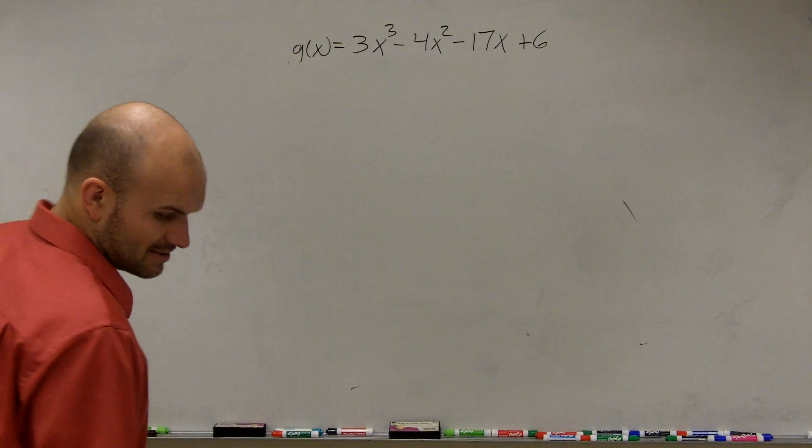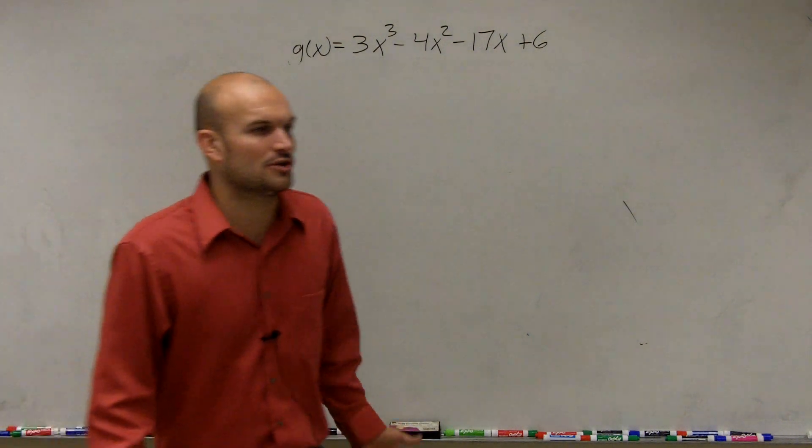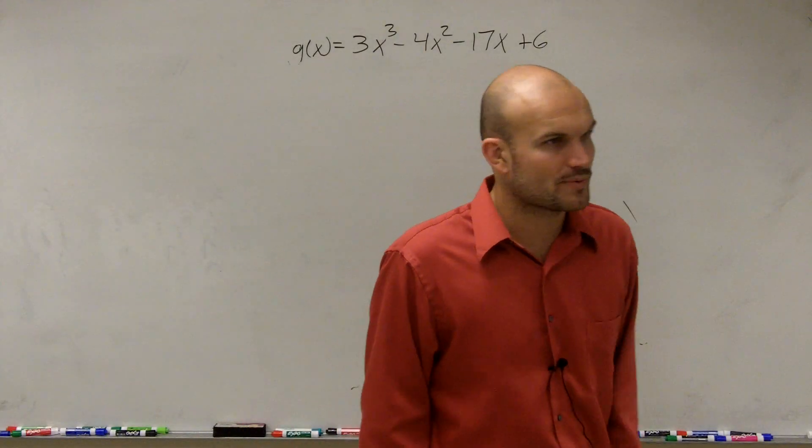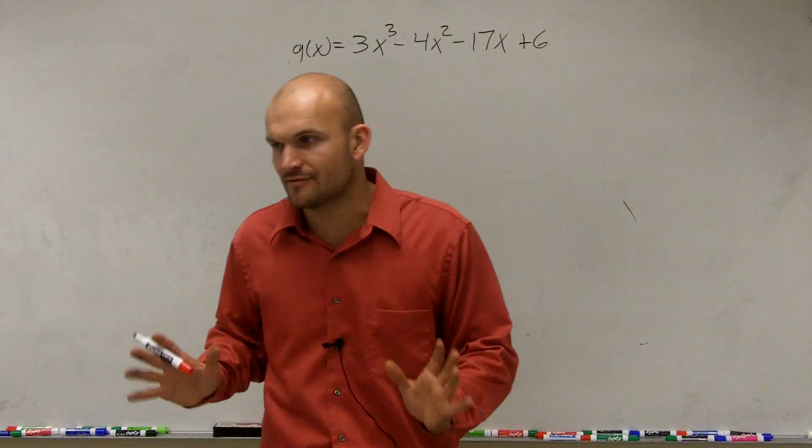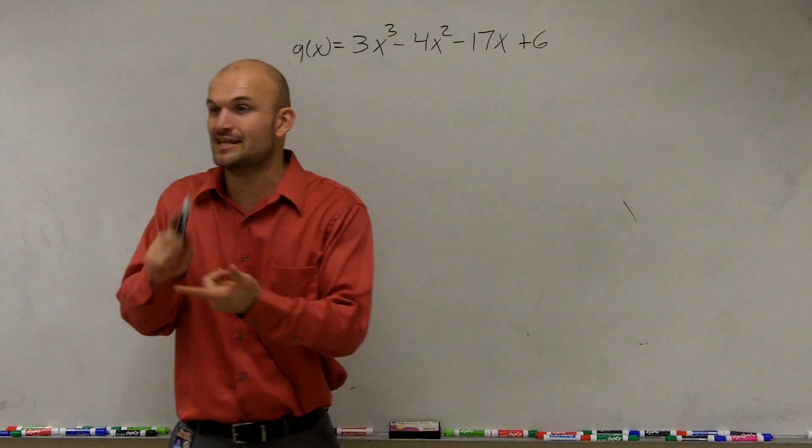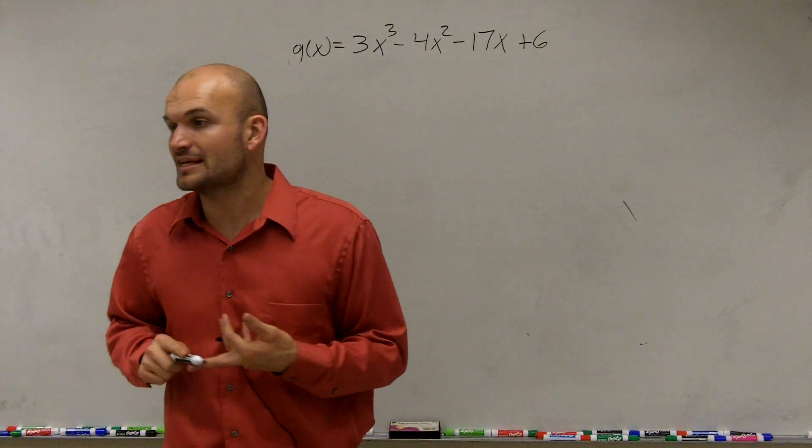So the last test has simply told us how many rational roots we have, right? That's it. Just how many rational zeros that we're going to have in our problem. That was it. Didn't tell us anything about irrational. Didn't tell us anything about complex.